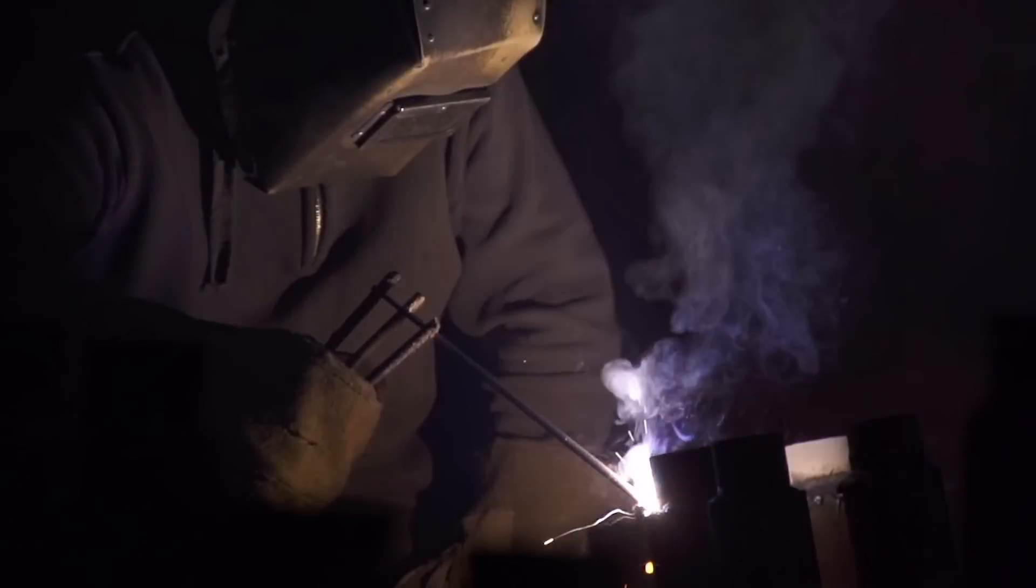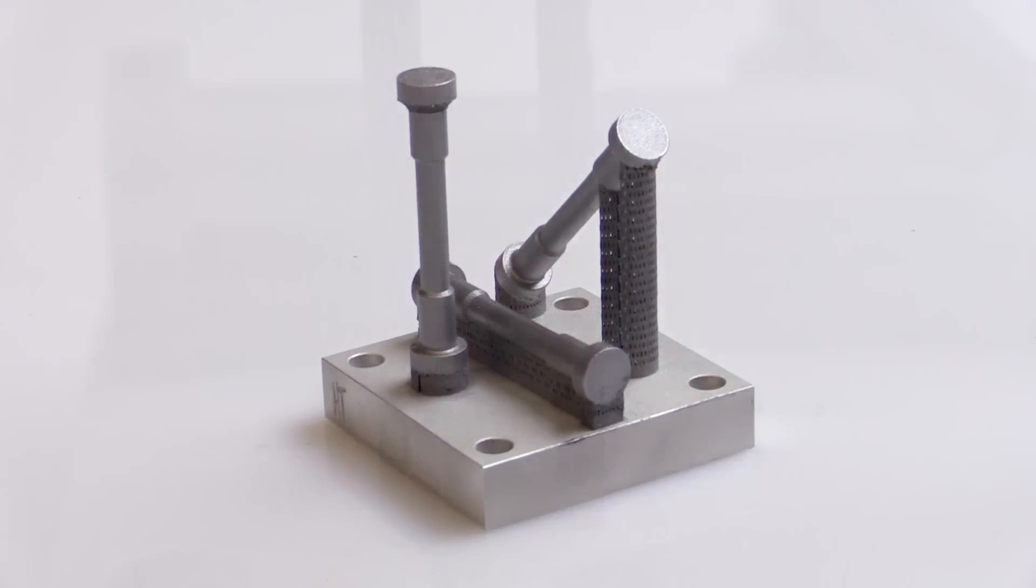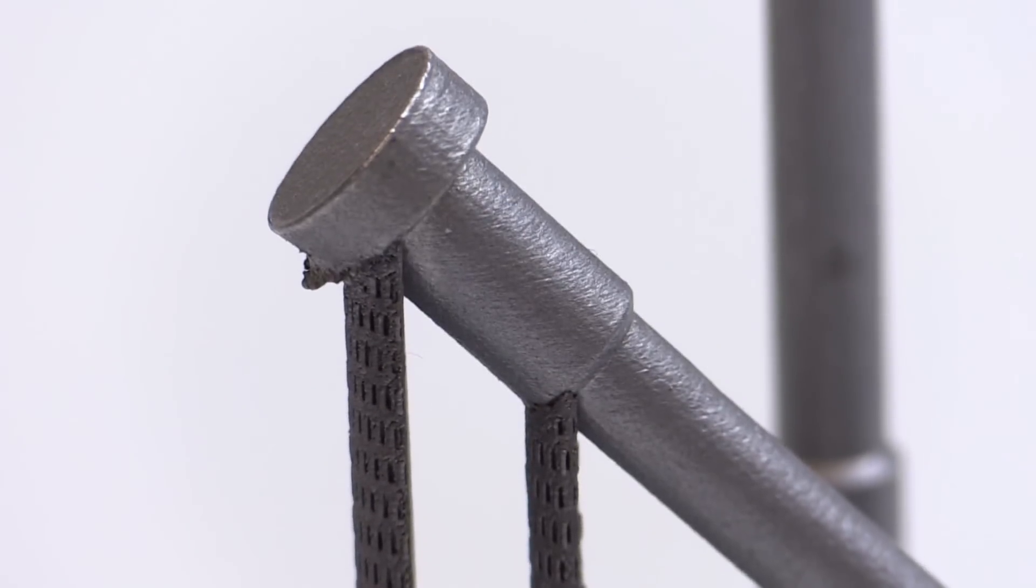And so that adds the constraint that the metals you put in there generally have to be weldable. And so what we did at HRL was we took an unweldable metal and made it weldable so they can now be processed in conventional additive manufacturing equipment.